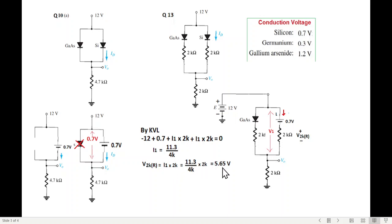So v2kR will be i1 into 2k, i1 is this value 2k, so it will be 5.65 volt. Now what is the total voltage? Now this voltage plus this voltage. So v1 voltage will be 0.7 plus 5.65, that is 6.35.